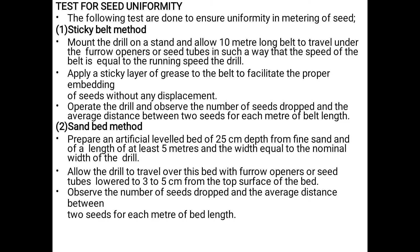Test for seed uniformity. The following tests are done for seed uniformity. Sticky belt method: Mount the drill on a stand and allow a 10-meter long belt to travel under the furrow opener or seed tubes such that the speed of the belt equals the running speed of the drill. Apply a sticky layer of grease to the belt to facilitate proper embedding of seeds without displacement. Operate the drill and observe the number of seeds dropped and the average distance between two seeds for each meter of belt length.